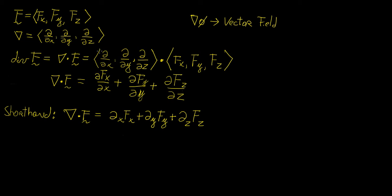Just to recall a little bit of vector algebra: when you have the dot product of two vectors, all you do is multiply the corresponding components together and then add them up. So this vector operation gives us a scalar function, and this scalar function is the sum of all those first partial derivatives of this vector field.